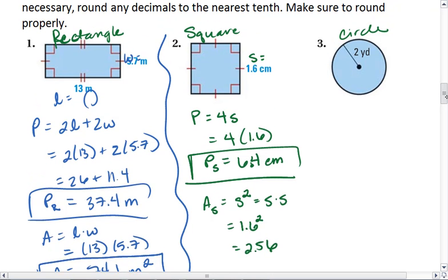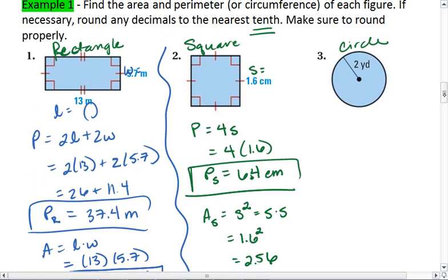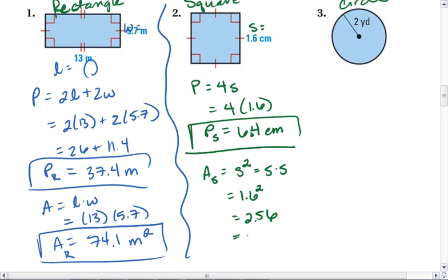But you are told to round to the nearest tenth. Meaning this rounds to 2.6 centimeters squared. And that's the area for my square.